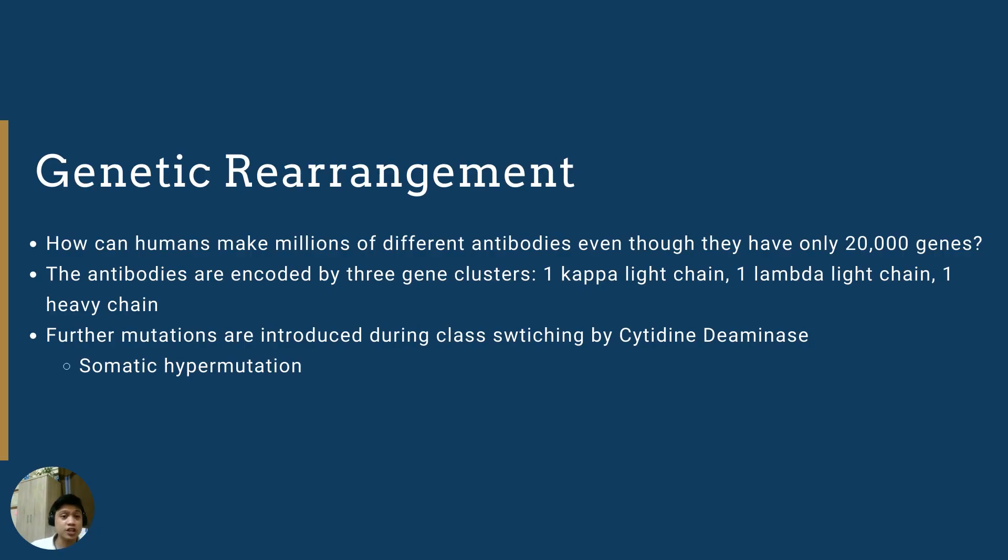The next concept is genetic rearrangement. For this, we have the question, how can humans make millions of different antibodies, even though they only have 20,000 genes? The answer to that is genetic rearrangement. The antibodies are encoded by three gene clusters. One gene cluster for the kappa-light chain. One gene cluster for the lambda-light chain. And one gene cluster for the heavy chain.